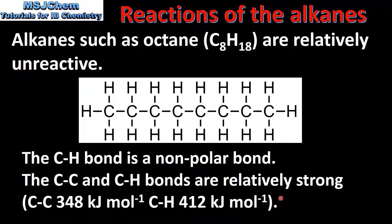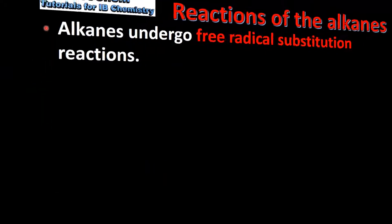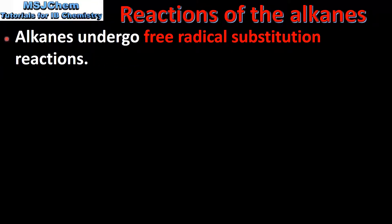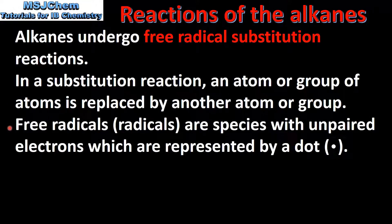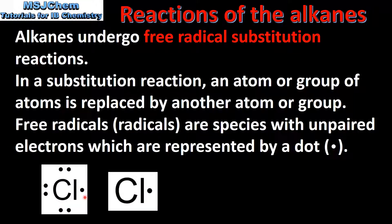The two types of reactions that alkanes undergo are combustion reactions, which were covered in a previous video, and free radical substitution reactions. In a substitution reaction, an atom or group of atoms is replaced by another atom or group. Free radicals or radicals are species with unpaired electrons, which are represented by a dot. Here we have an example of a chlorine free radical which has an unpaired electron.